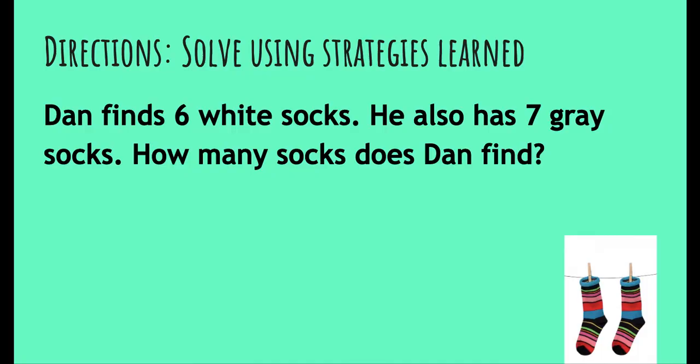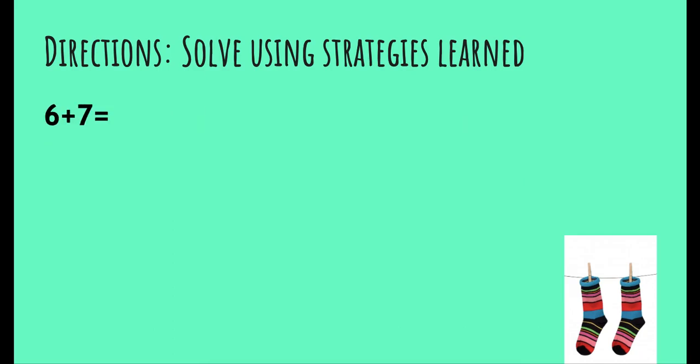The strategy that helped me is doubles. Alright, let's do this one. Dan finds six white socks. He also has seven gray socks. How many socks does Dan find? Dan found six white and he has seven gray, so how many does he have in total? We should be thinking 6 plus 7. What strategy can you use for that?